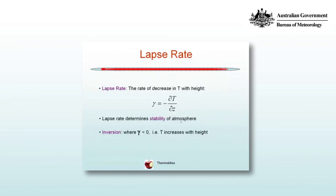The key thing from the previous figure is the rate at which temperature decreases with height. We're going to define that rate of decrease with height and call it the lapse rate. The lapse rate will be indicated by the Greek letter gamma, and it's going to be minus partial dT/dz. It's minus because typically the temperature decreases with height, and so a typical situation is going to have a positive lapse rate. As we'll see later in this course, the lapse rate determines the stability of the atmosphere and the potential for thunderstorm development.